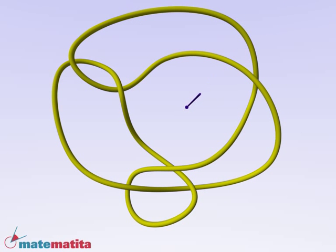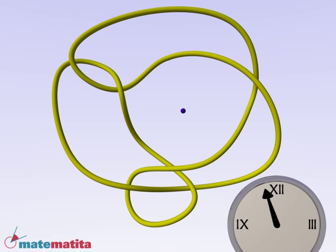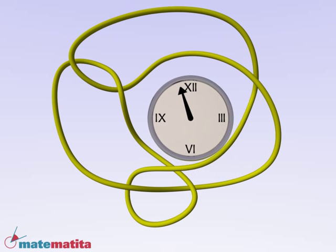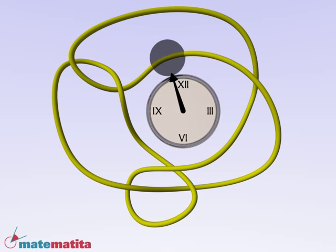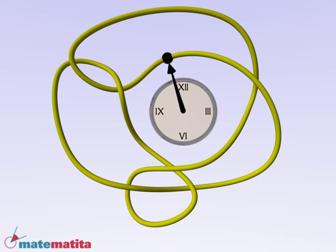We choose an axis. We will make a reel around it. We choose a starting point and walk along the knot, turning clockwise around the axis.